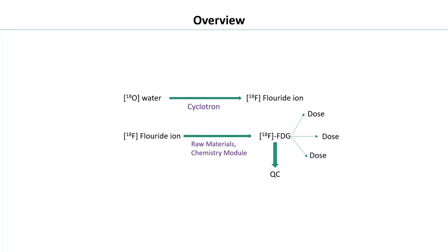For a brief overview: we begin with O-18 water, which is ordinary water enriched with the stable isotope O-18. This O-18 water is bombarded by a beam of protons, converting O-18 to F-18 in the form of F-18 fluoride ion. This fluoride ion is then converted to F-18 FDG using raw materials and a chemistry module. After purification steps, FDG is collected in a vial, quality control tests are performed, and it is sent to centers for diagnostic scans.